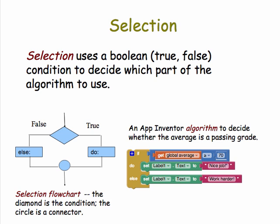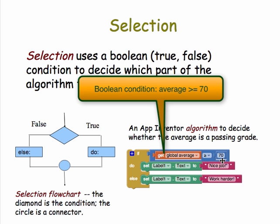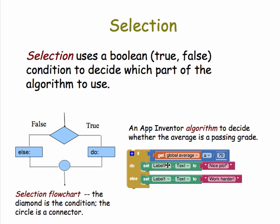Here's an example of a selection from App Inventor. We use the if-else block, which you've used many times already in your apps. In this case, we test if the global average is greater than or equal to 70. That's our Boolean condition. That expression is either going to be true or false. If it's true, we'll do this part. The do part says set the text in the label to nice job. Else, we'll do this part, which sets the text in the label to work harder.